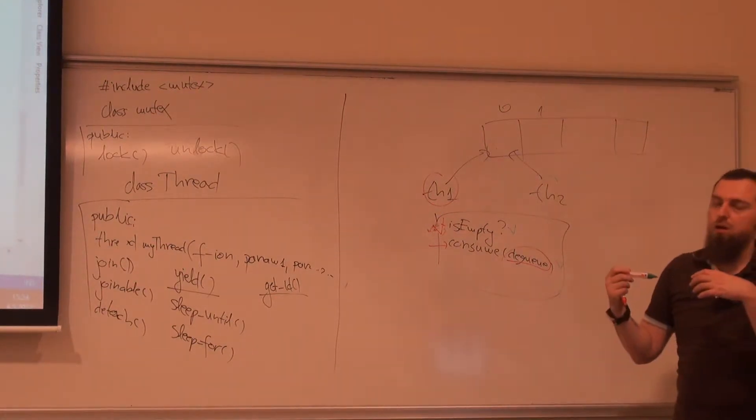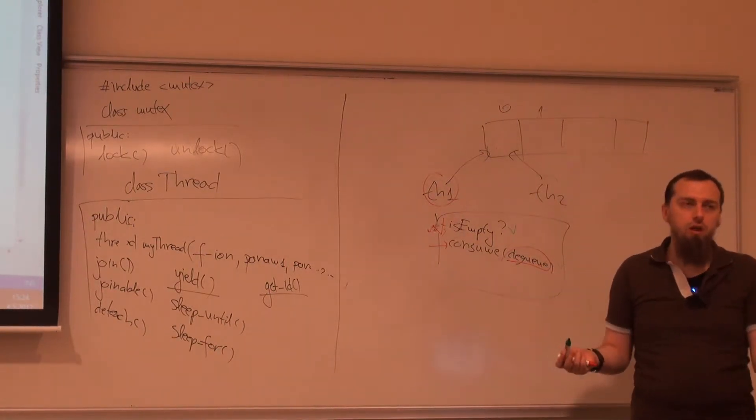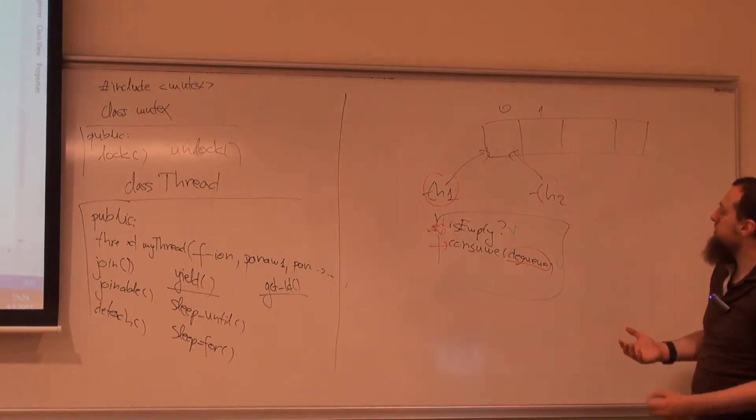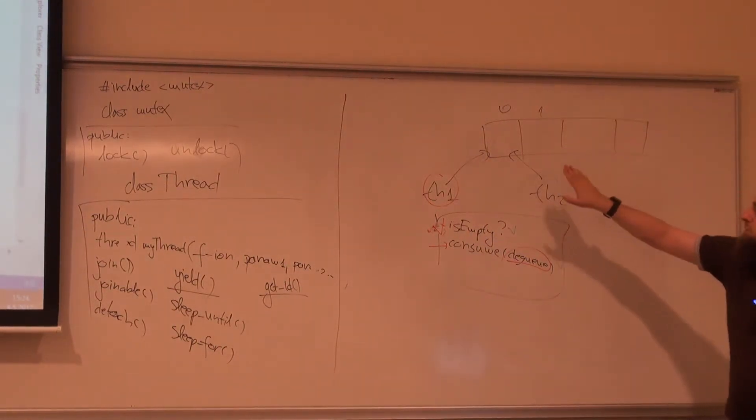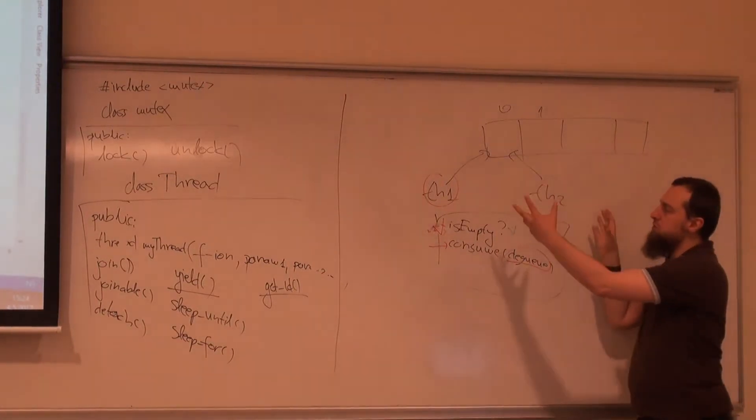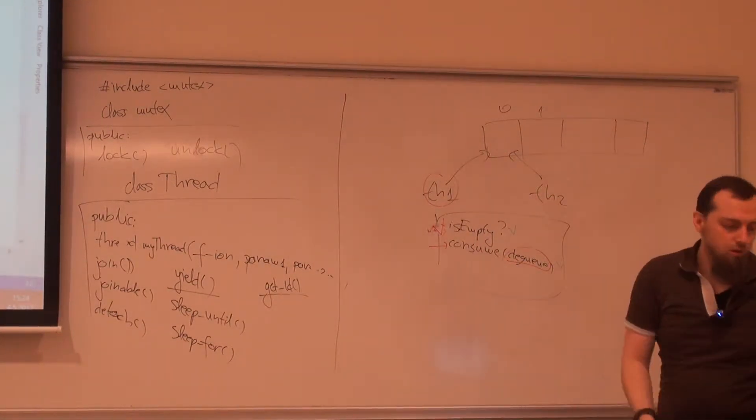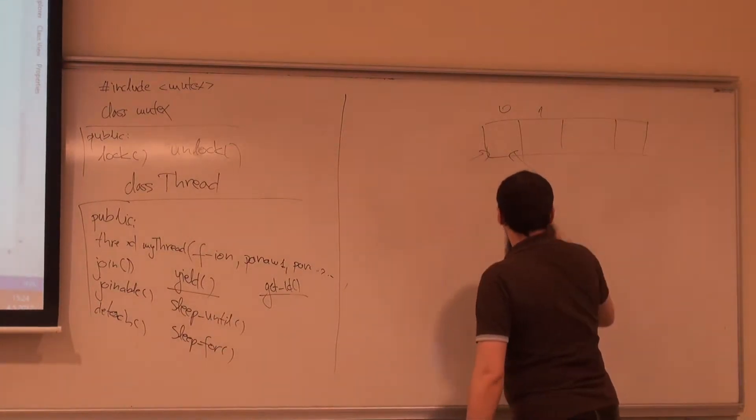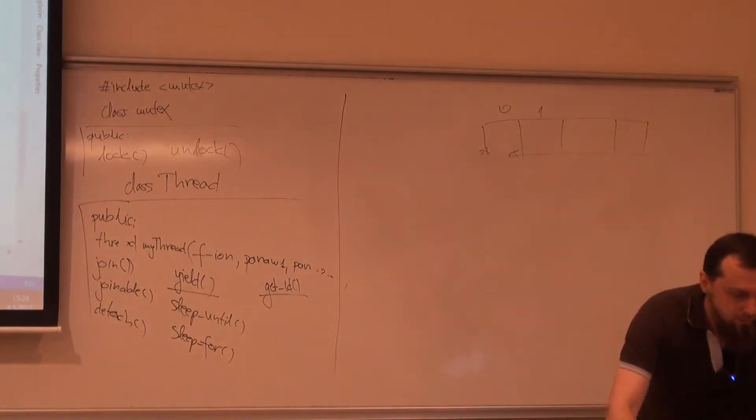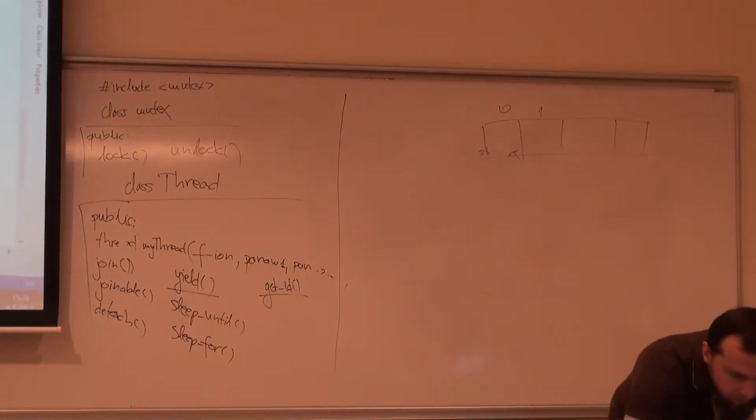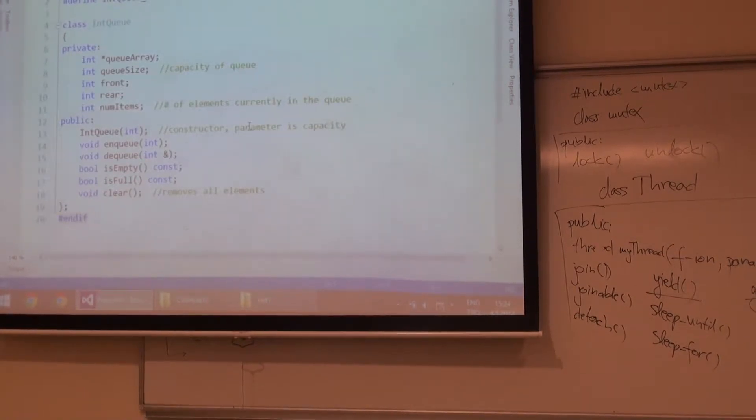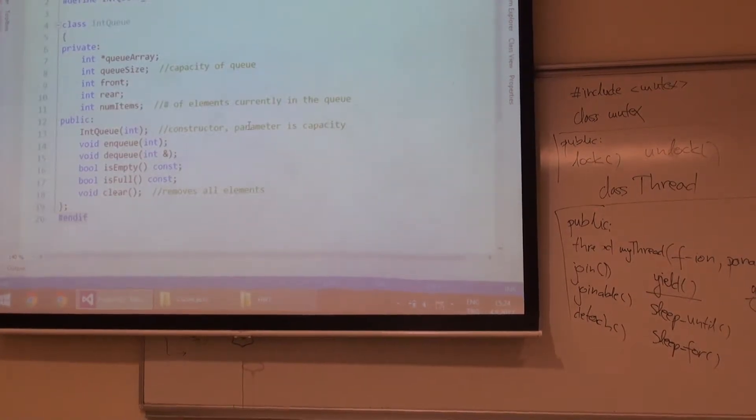But if we use mutexes, we won't have this problem. So this is our stuff, what we are trying to do. We have a producer that puts elements here and we have consumers, two consumers that are trying to consume the elements that the producer produces. Let's go very briefly with the queue class. I'm not going to explain it in details.